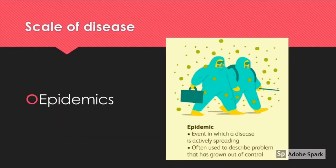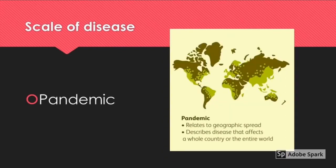Another key concept before we look at the diseases themselves is the scale of an outbreak — we can look at this from two main scales: epidemics and pandemics. An epidemic generally refers to a sudden, large outbreak of disease affecting a population at higher than normal rates, tending to be within a confined geographical area.